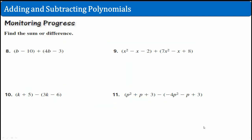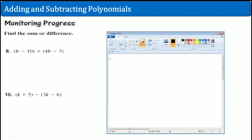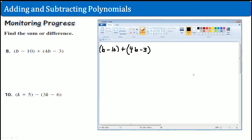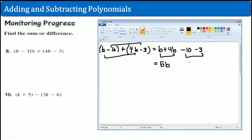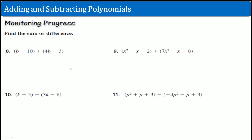To monitor your progress, I gave you four problems. Pause and try them, then I'll go over the solutions. Let's go over the first one. We have b minus 10 plus 4b minus 3. I like doing it horizontally. So these two go together: b plus 4b. The negative 10 and the minus 3 go together, so that's minus 10 minus 3. b plus 4b becomes 5b, and negative 10 minus 3 becomes negative 13.